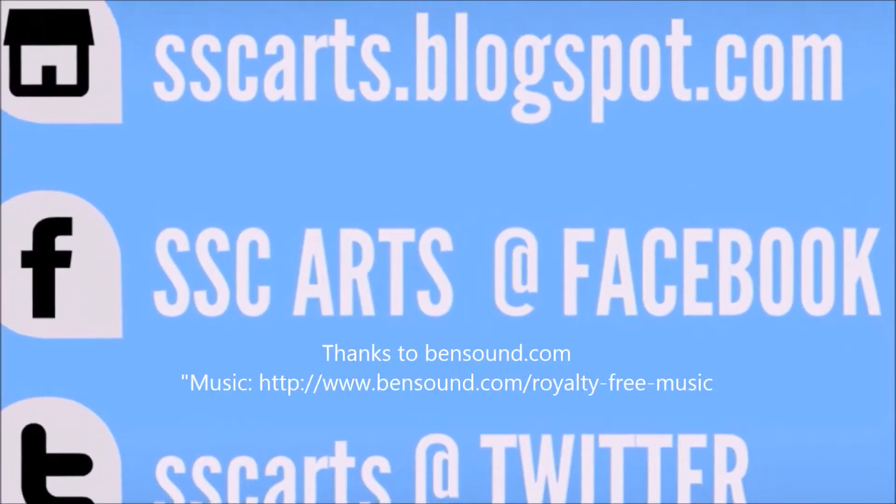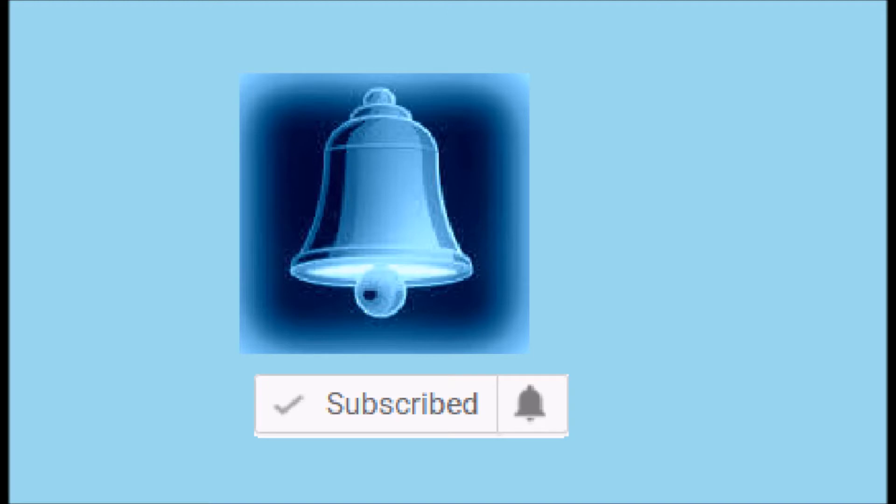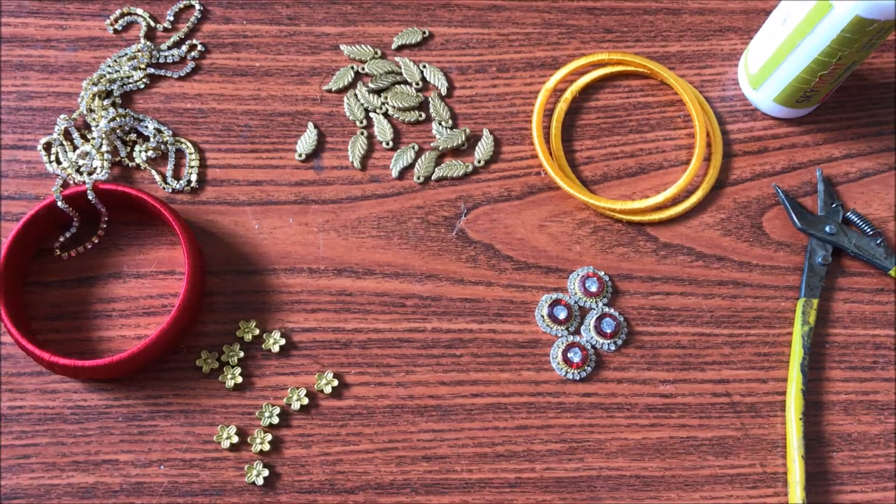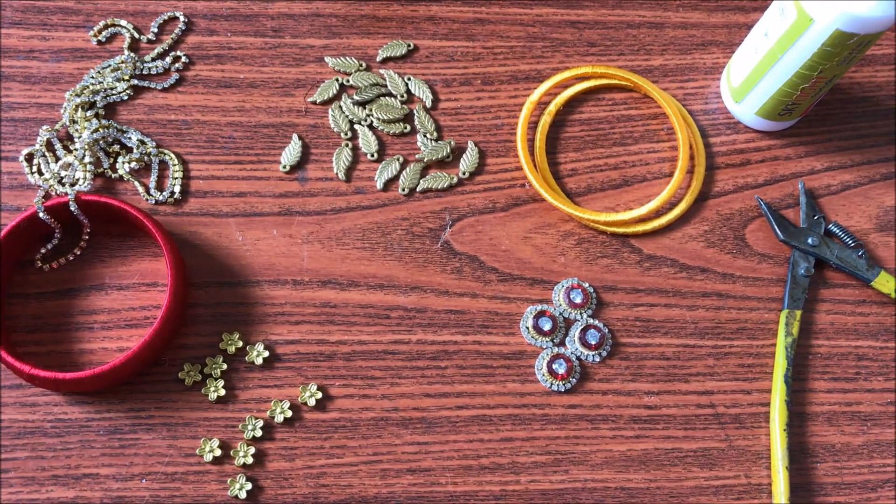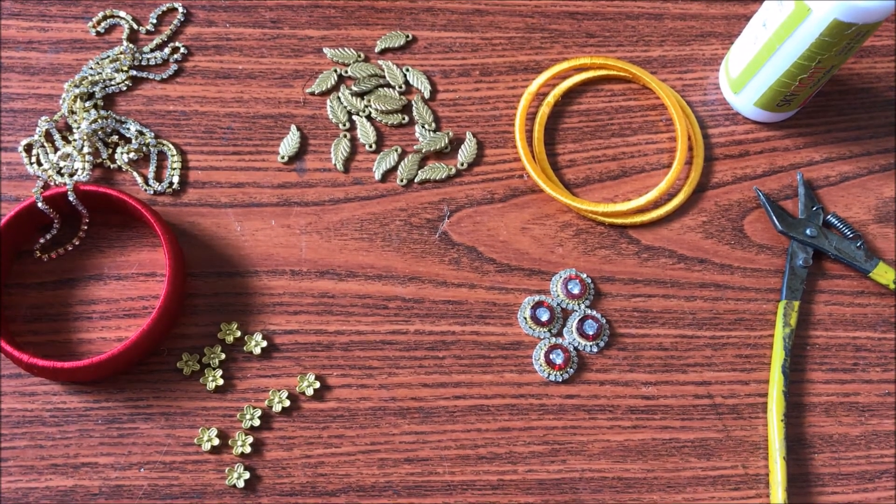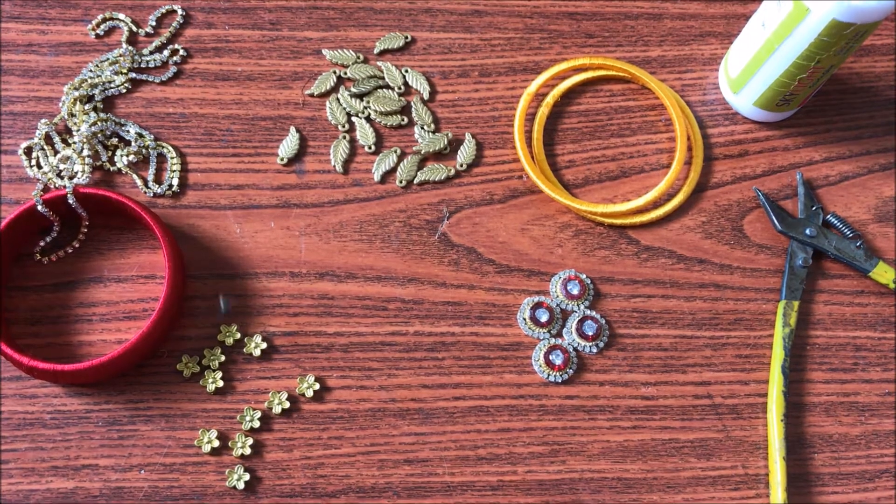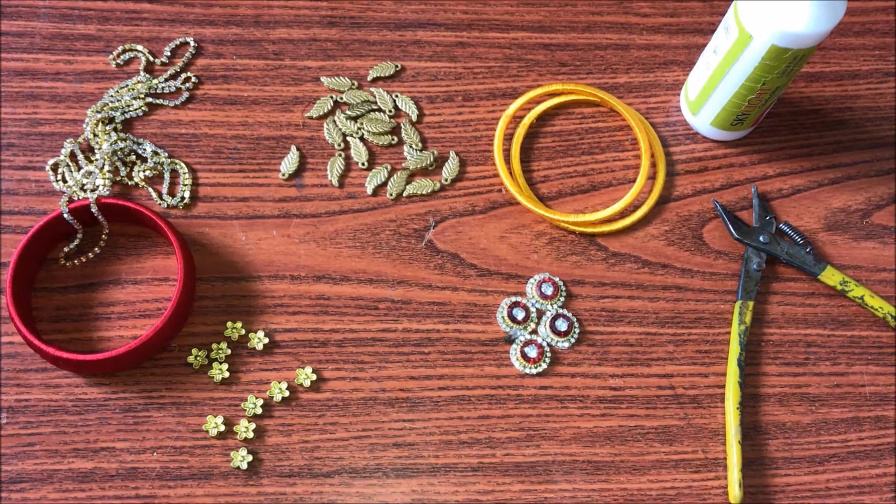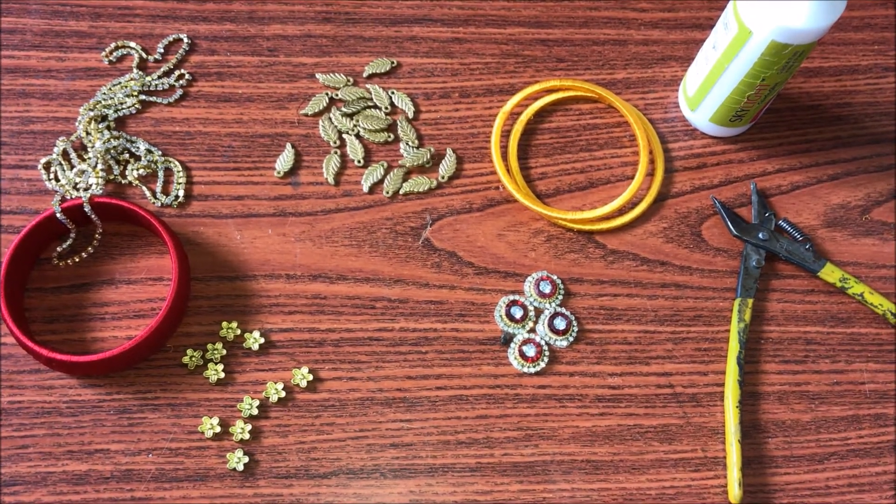The materials required are: rapid one cut bangle red, rapid four cut bangle two yellow ones, antique leaves, antique flowers, stone chain, ball chain, small kundans wrapped with stone chain and ball chain, glue, and cutter.